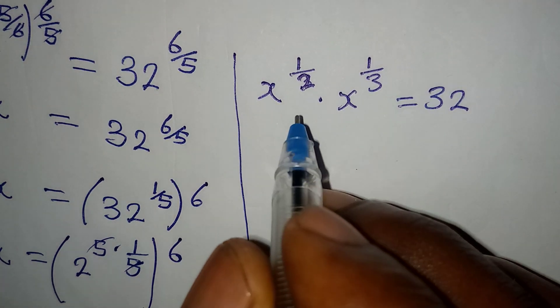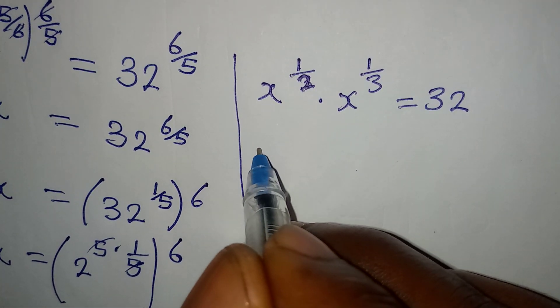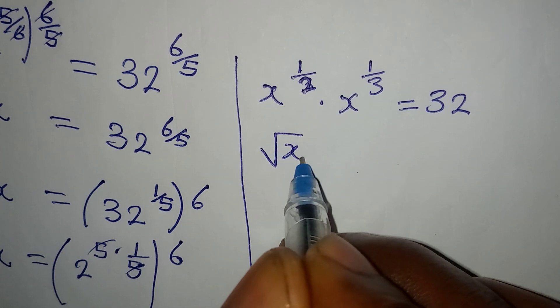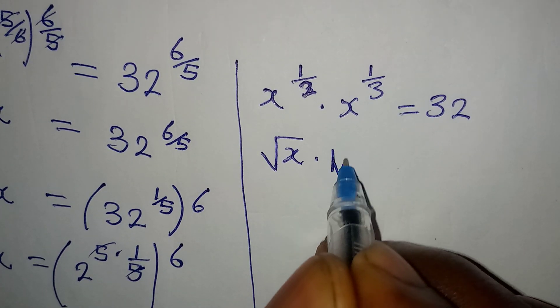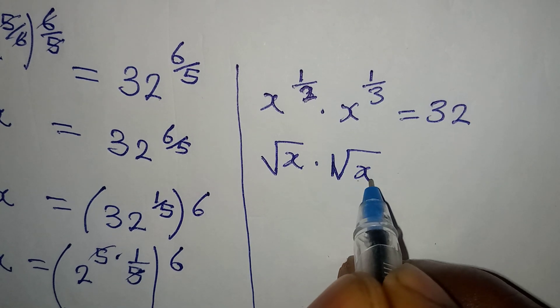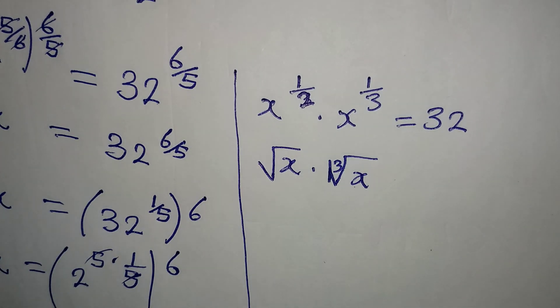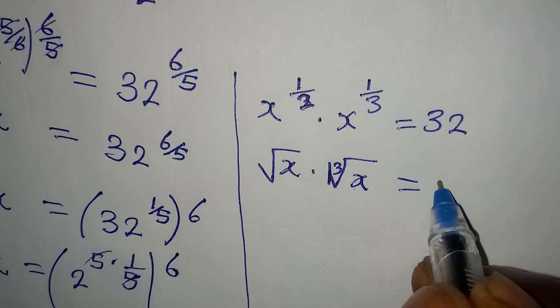Now, from here, do you know that this is the same thing as the square root of x multiplied by the cube root of x? For the cube root, there must be 3 in there. So this is equal to 32.